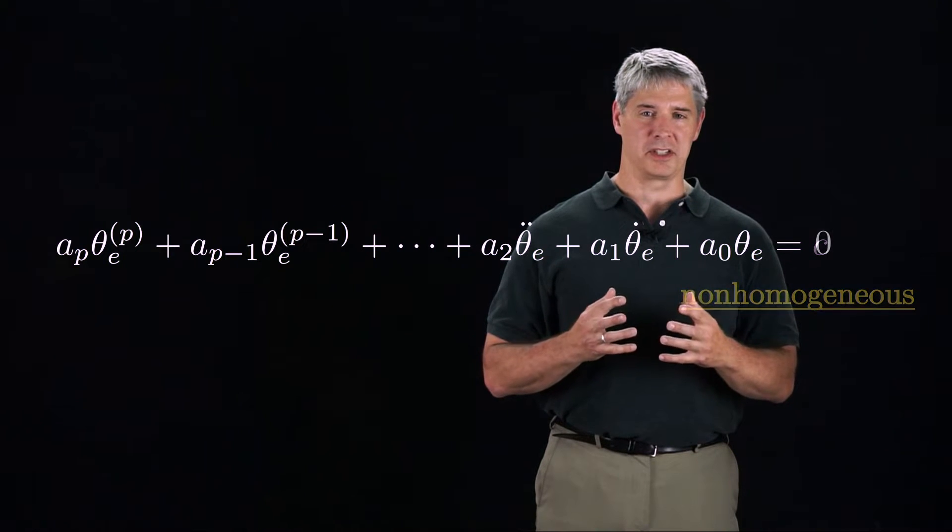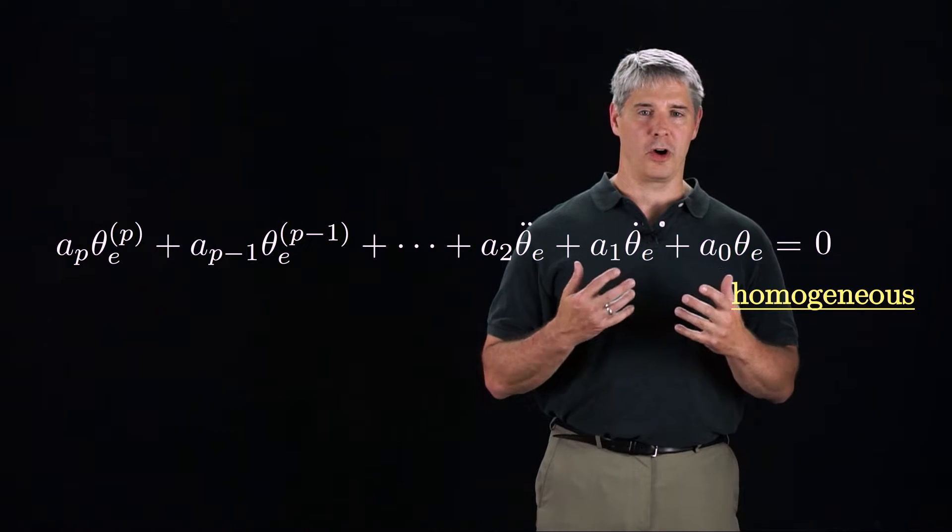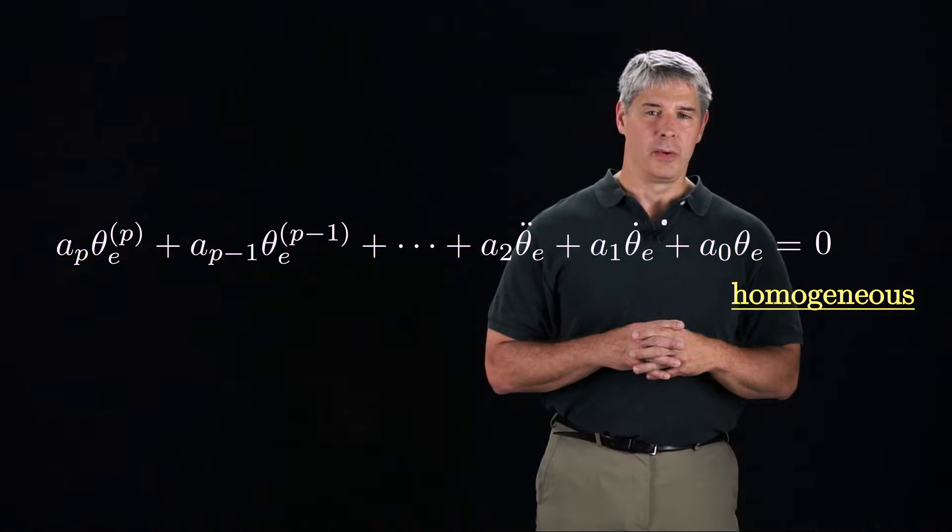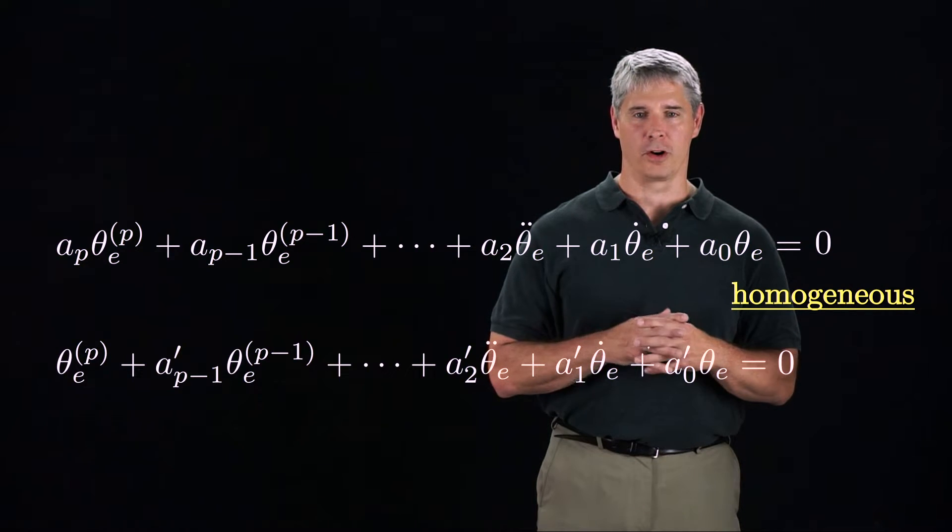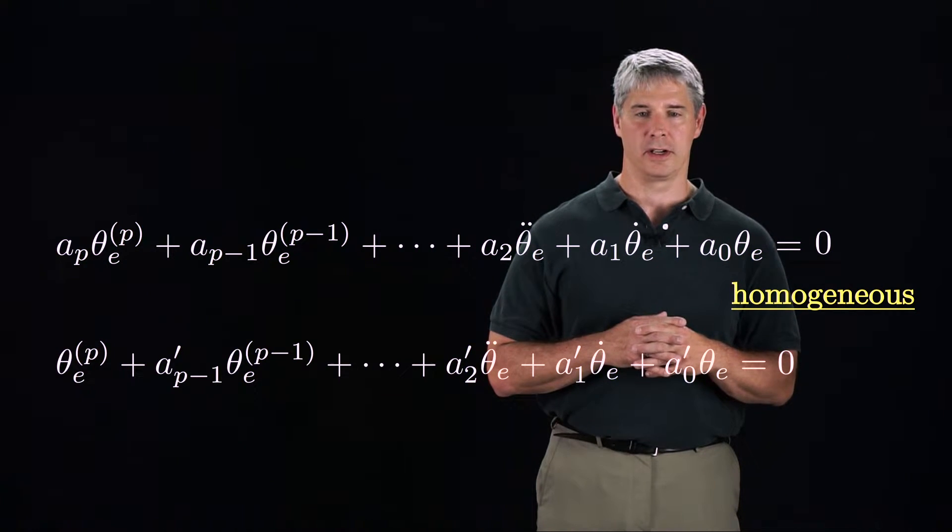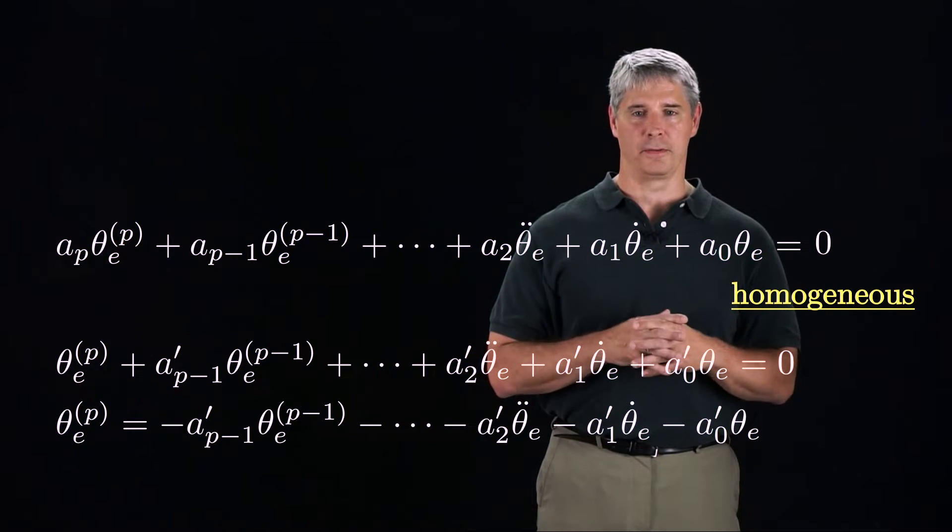If C is equal to zero, as it was for our mass-spring-damper example, then the differential equation is homogeneous. We can divide both sides by the coefficient AP to get our preferred form of a homogeneous differential equation with coefficients A-prime. We could also write this equation in this equivalent form.